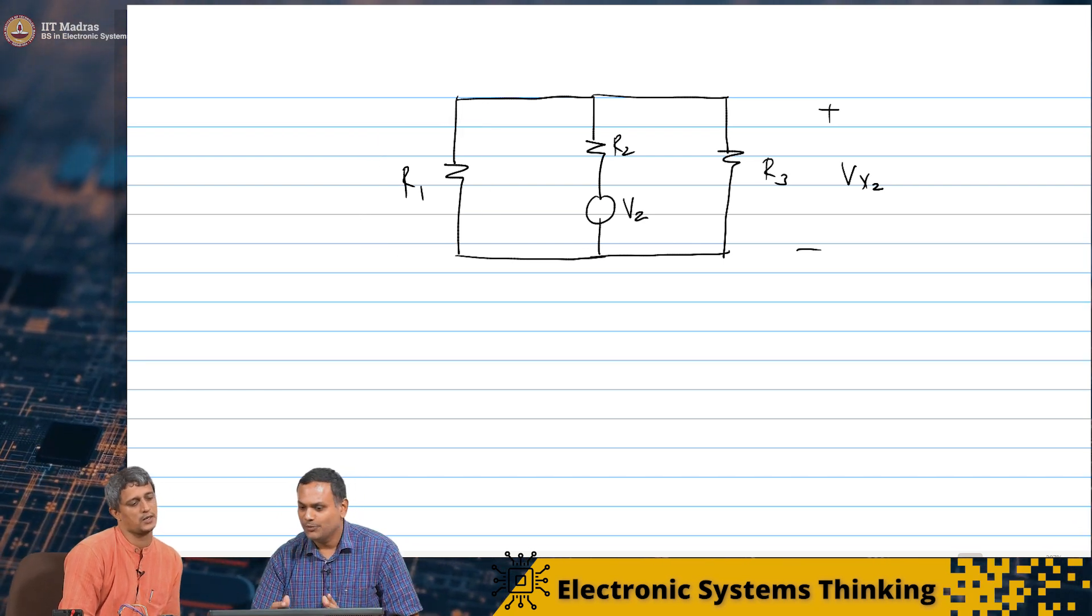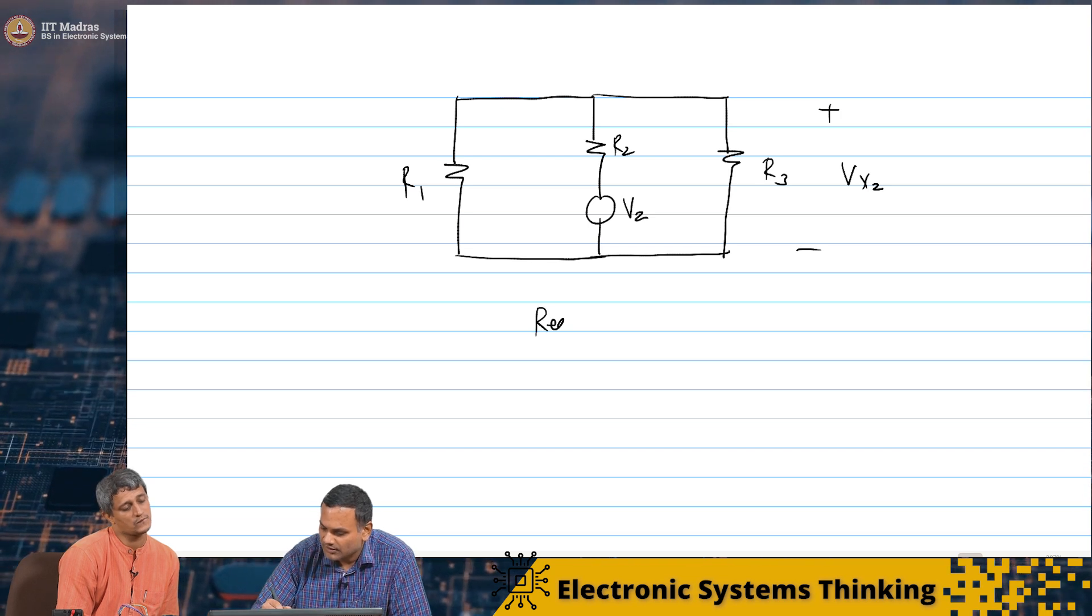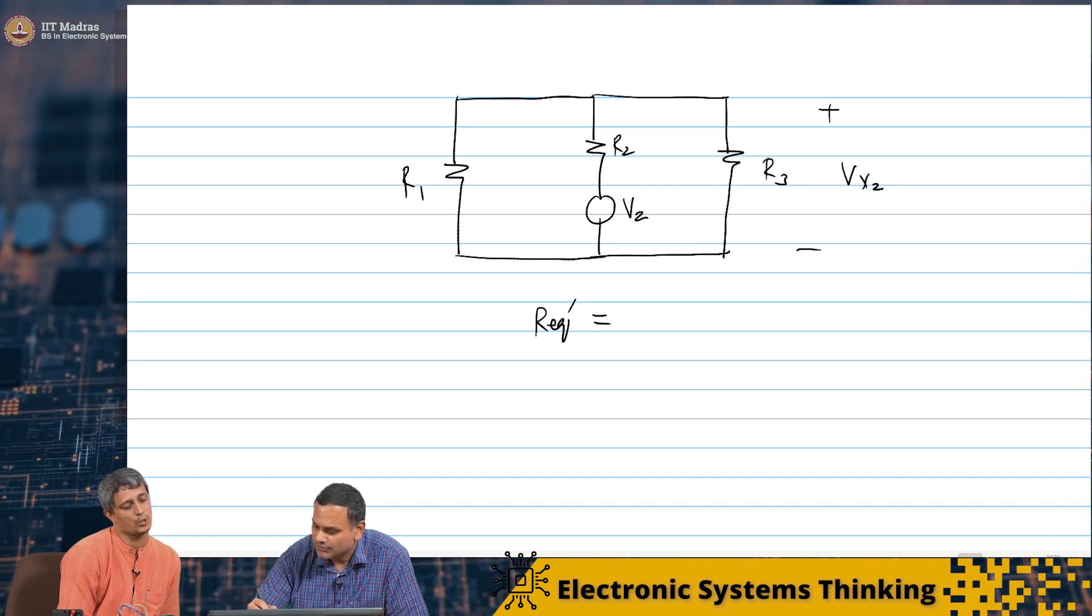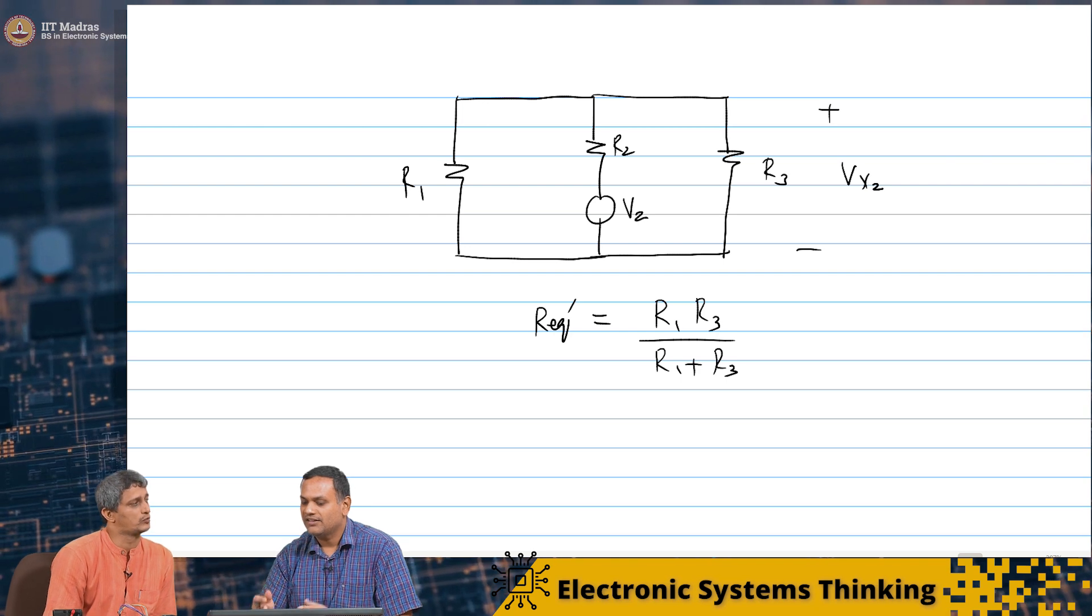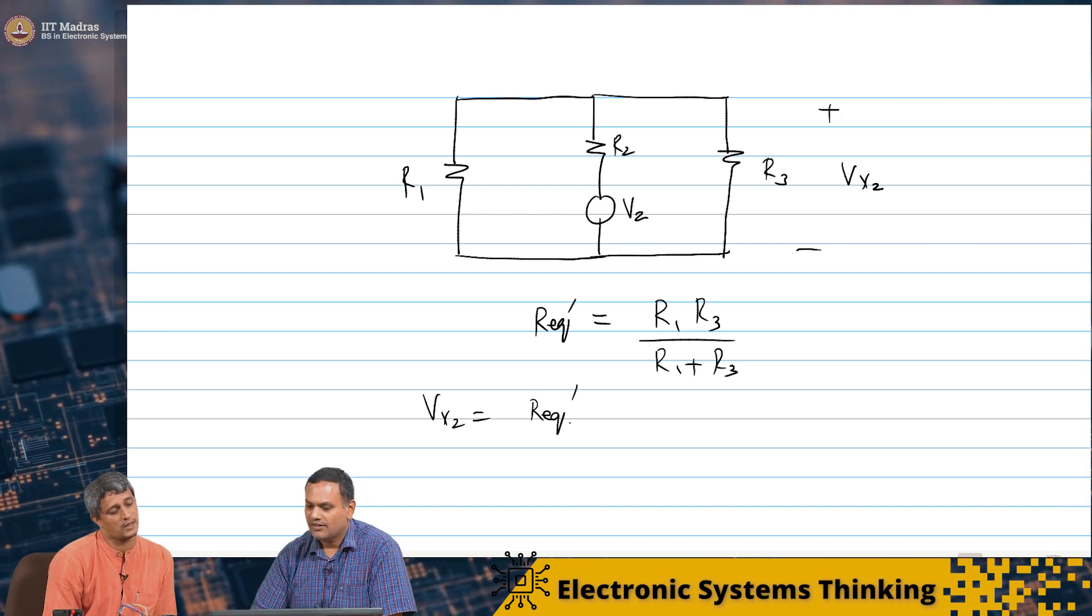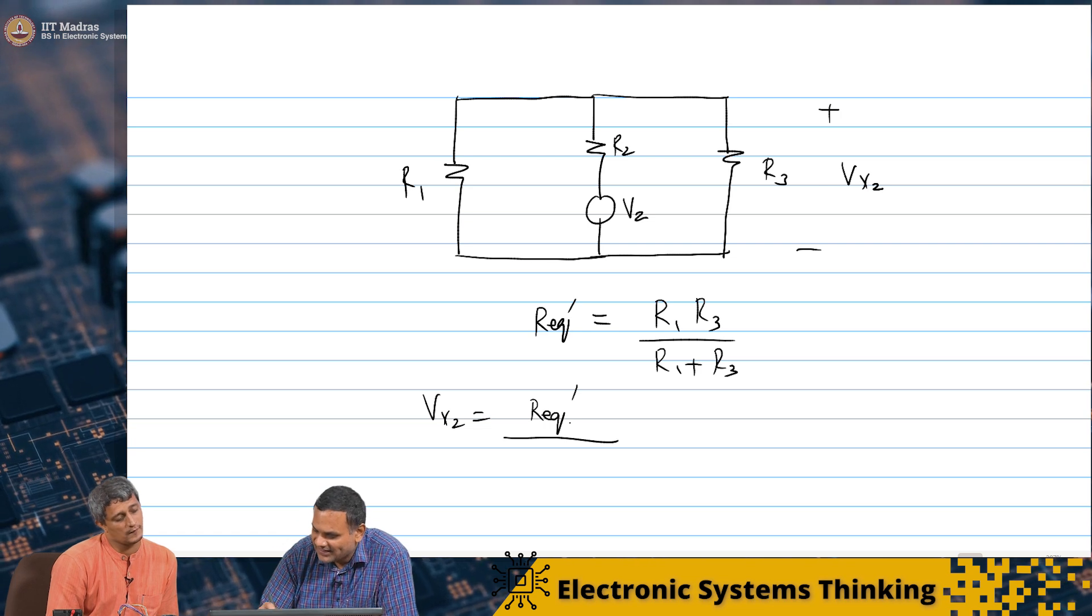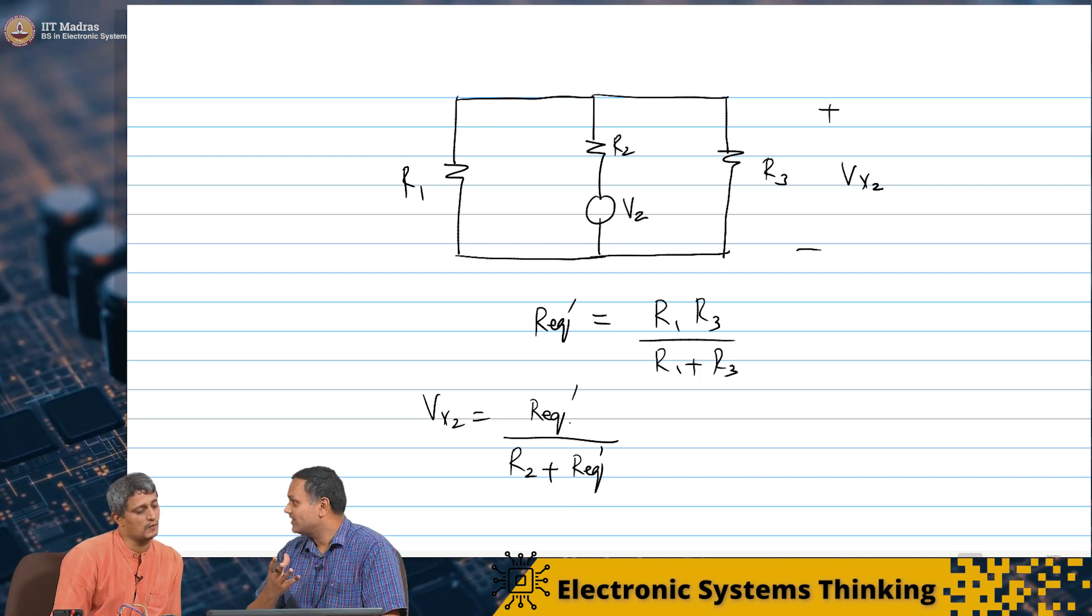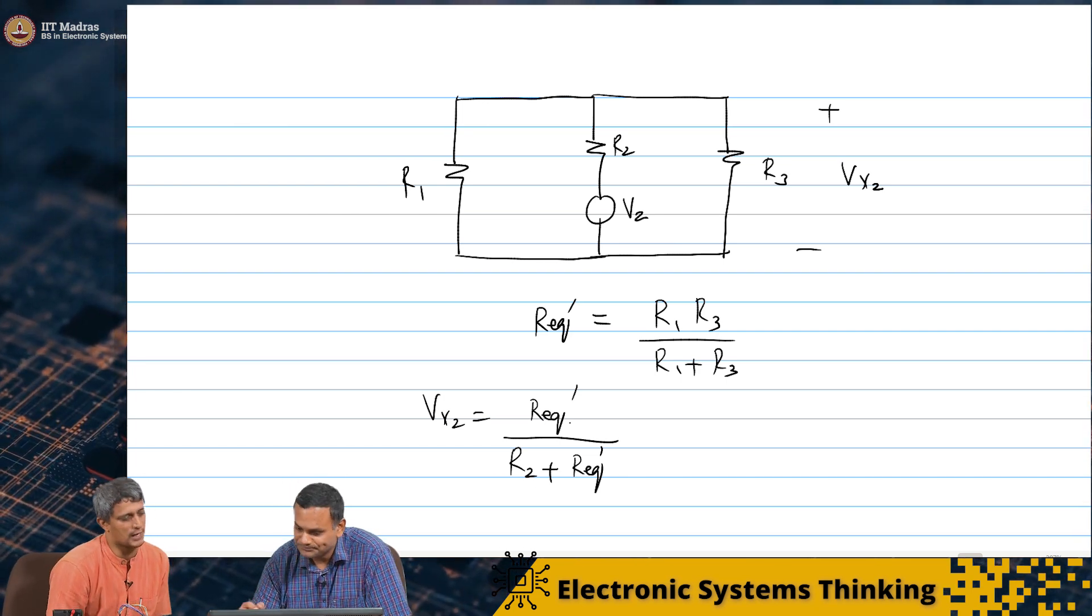So in fact, we can write this as, first we will write maybe I will call this R equivalent prime. Is simply R1 parallel R3. So R1 R3 by R1 plus R3. And once we do that we know that Vx2 is simply R equivalent prime, I'm writing it this way quickly because we've done it for the previous network. It is identical. So we just write it like this R2 plus R equivalent prime times V2.